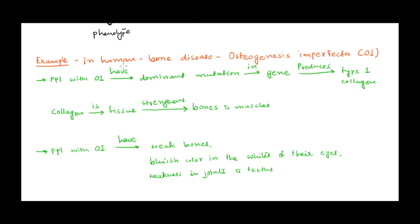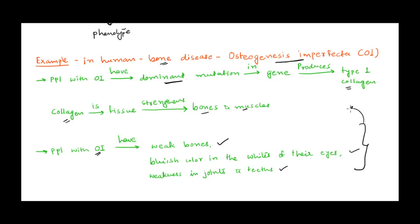Now let's take one real example. In humans there is a bone disease called osteogenesis imperfecta. In case of people with osteogenesis imperfecta, there is a dominant mutation in a gene that codes for collagen, and collagen as we know is needed for strengthening the bones and muscles, which results in osteogenesis imperfecta. People with this disease would have weak bones, bluish color in the whites of their eyes, and also weakness in joints and teeth.